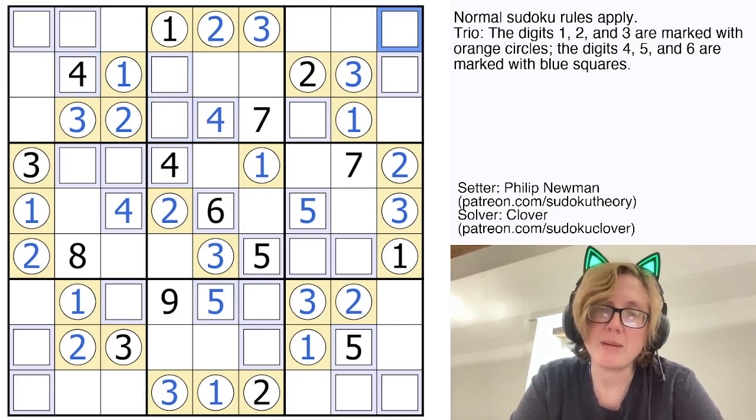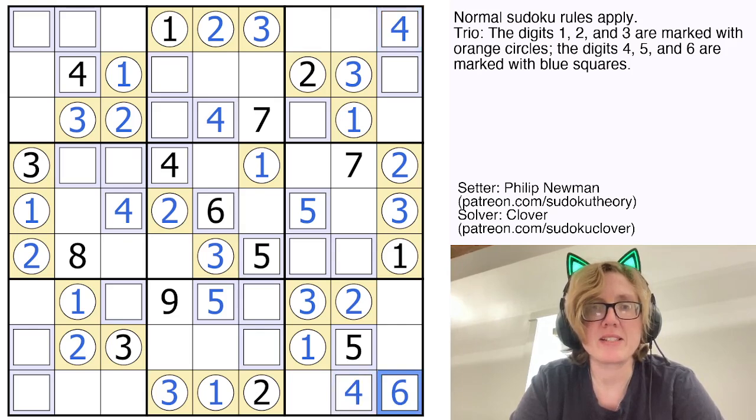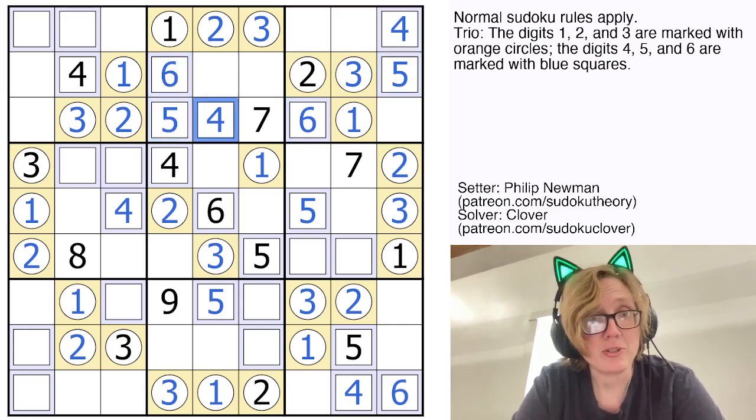So the only blue cell in the top right that's not seen by a 4 is the one I have highlighted now, so that's going to be a 4. That makes this a 4 and makes this a 6. And then that 6 sees this cell, so the 6 in this region will go here. Then the 5 and 6 I just placed disambiguate 5 and 6 in region 2.